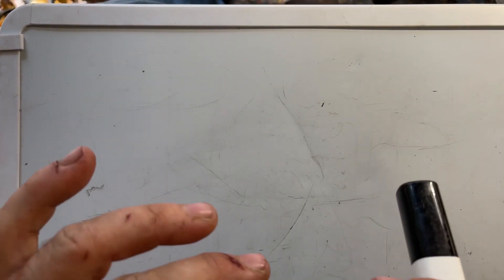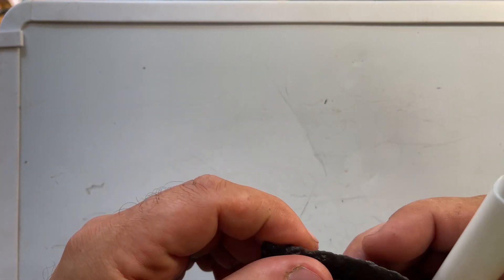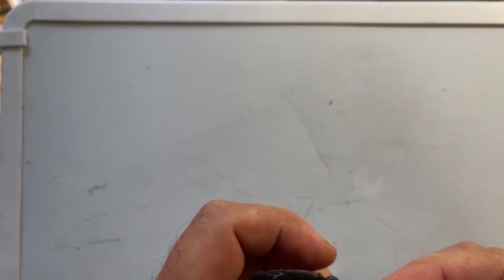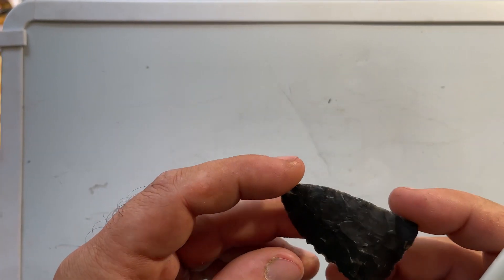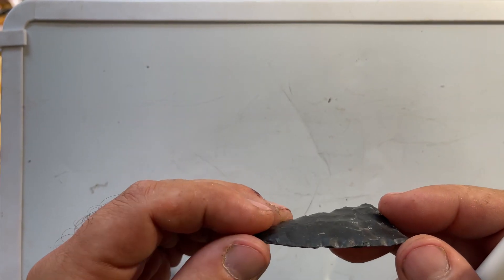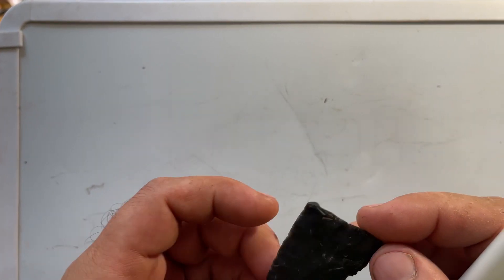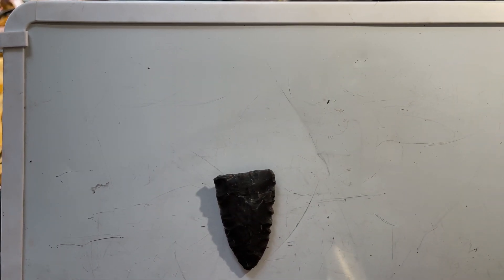I'm going to do my best to explain edges, and maybe talk a little bit about platforms too. One of the most important things, in my opinion, is to know that you need enough edge thickness for the flake to initiate.